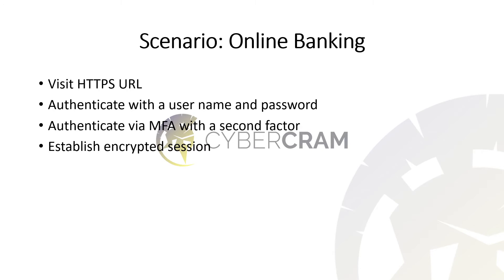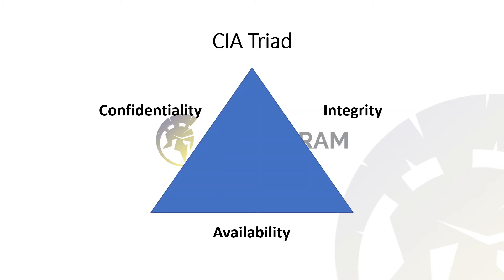The scenario I want you to consider is online banking — something that you and I do on a frequent basis, whether via a web browser or via an app on your phone. You establish an HTTPS connection, then you authenticate with a username and password, and most legitimate banks now will ask you to authenticate with a second factor via multi-factor authentication. Once this is done, you'll establish an encrypted session. The question is: where is CIA present here?